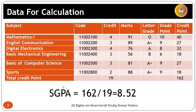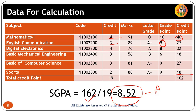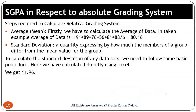This is the data taken to calculate the SGPA using both absolute and relative grading systems. Using the absolute grading system, the SGPA calculated here is 8.52. SGPA is calculated as: credit multiplied by grade point gives credit point; then total credit points divided by total credits gives SGPA. For example, credit 3 multiplied by grade point 9 equals 27.